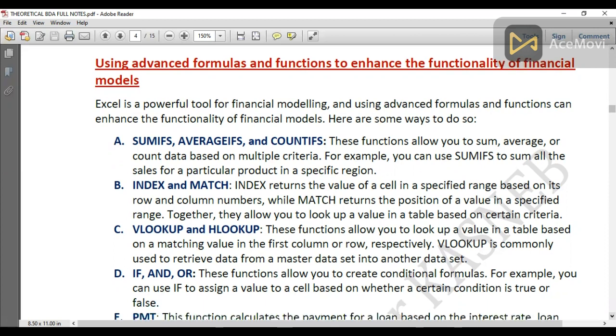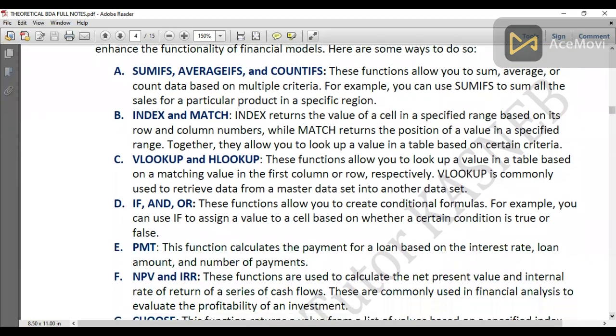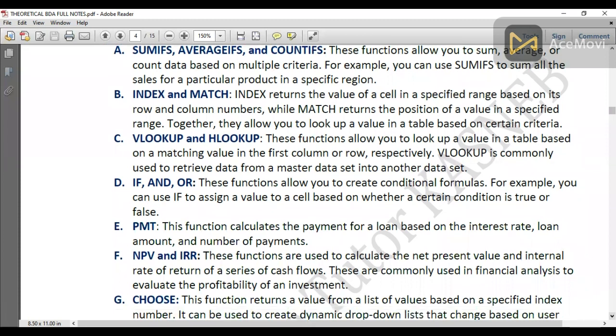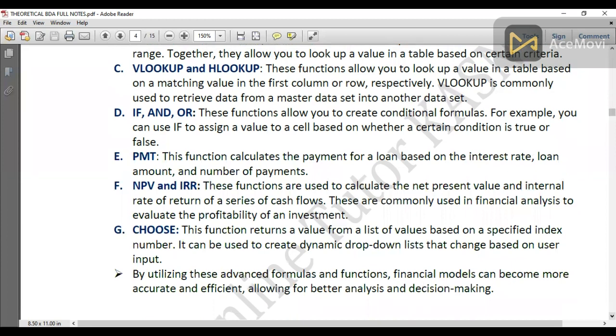PMT is used for loan amortizations, along with NPV and IRR, which you've likely covered in lower levels or CPA. The CHOOSE function returns a value from a list of values based on a specific index number. It can be used to create dynamic dropdown lists that change values based on user input. By utilizing these advanced functions and formulas, financial models can become more accurate and efficient.